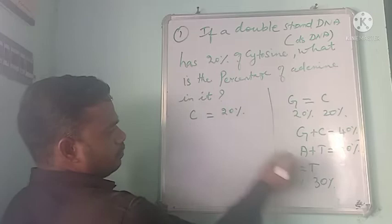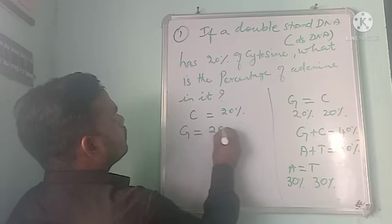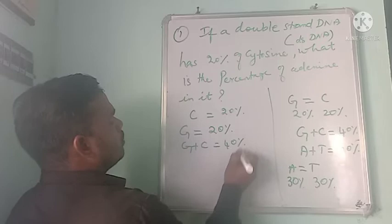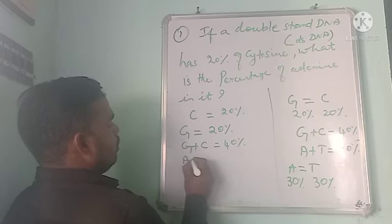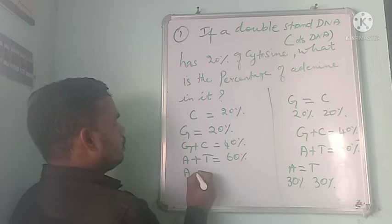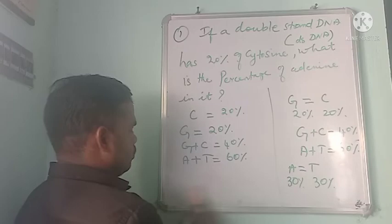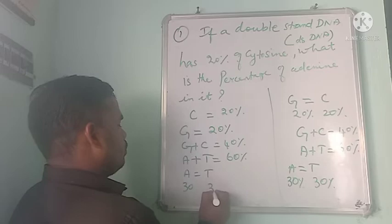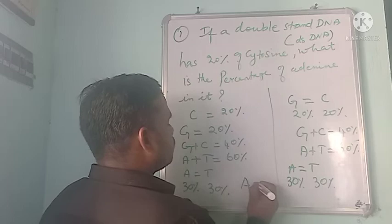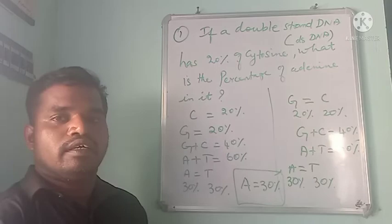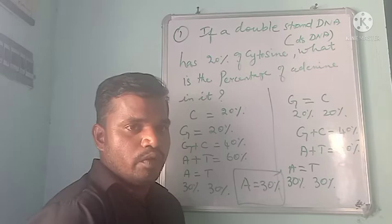So thereby, G is 20%, G plus C is 40%, and the remaining A plus T is 60%. Since A equals T, both A and T are 30% each. Therefore, the percentage of adenine is 30%. If you are clear with the concepts, you will easily solve the questions quickly and get the correct answer.